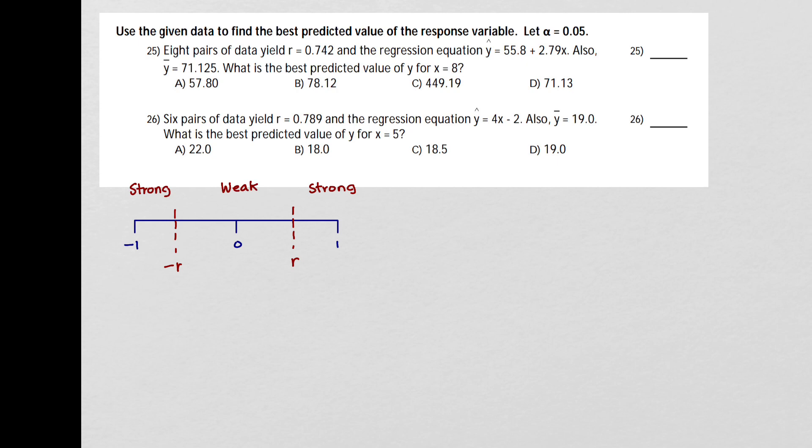So in the case where there is a strong relationship, that's where we are using the regression equation, and we calculate y hat. So here, anywhere from negative 1 to the negative critical r, we would also use y hat.